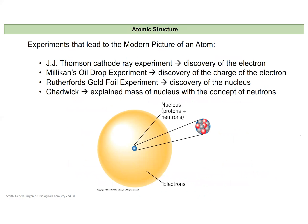Our modern picture of how the atom is structured came out of a series of experiments. J.J. Thomson's cathode ray experiment led to the discovery of the electron. The oil drop experiment led to the discovery that the electron carried a negative charge. Rutherford's gold foil experiment is famous for discovering the nucleus, moving us away from the picture of an atom like a chocolate chip cookie where everything was randomly dispersed within the space of the atom. The work of Chadwick was able to explain that the mass of the nucleus depends on something that isn't charged — a neutron.